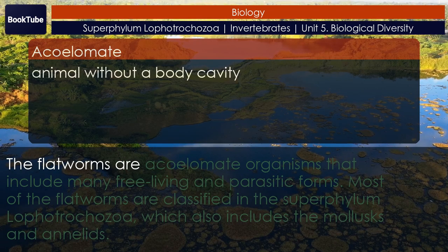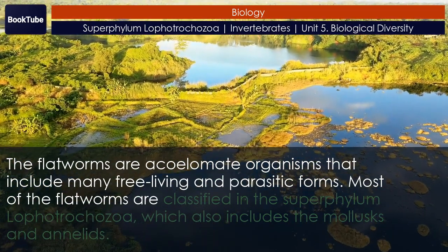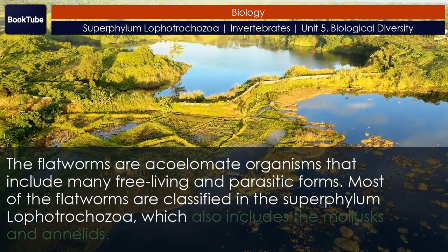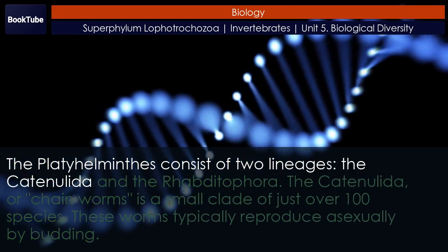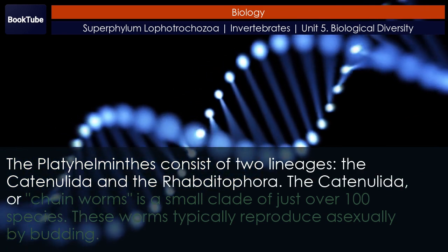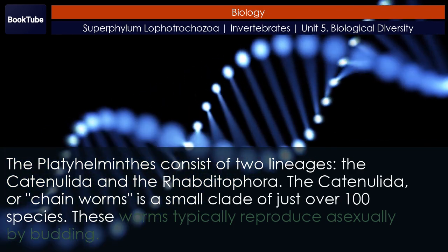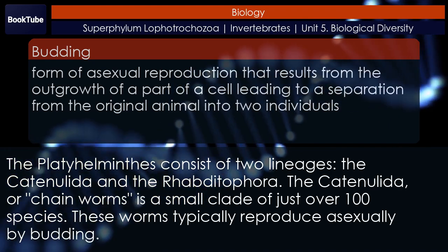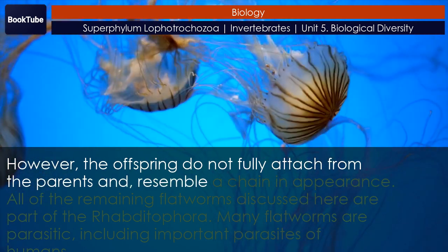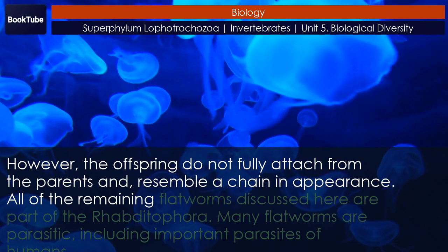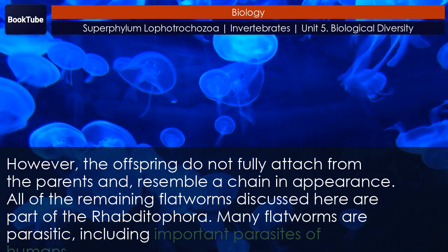Phylum Platyhelminthes. The flatworms are acoelomate organisms that include many free-living and parasitic forms. Most flatworms are classified in the superphylum Lophotrochozoa, which also includes the mollusks and annelids. The Platyhelminthes consist of two lineages: the Catenulida and the Rhabditophora. The Catenulida, or chain worms, is a small clade of just over 100 species. These worms typically reproduce asexually by budding; however, the offspring do not fully detach from the parents and resemble a chain in appearance. All remaining flatworms discussed here are part of the Rhabditophora. Many flatworms are parasitic, including important parasites of humans.